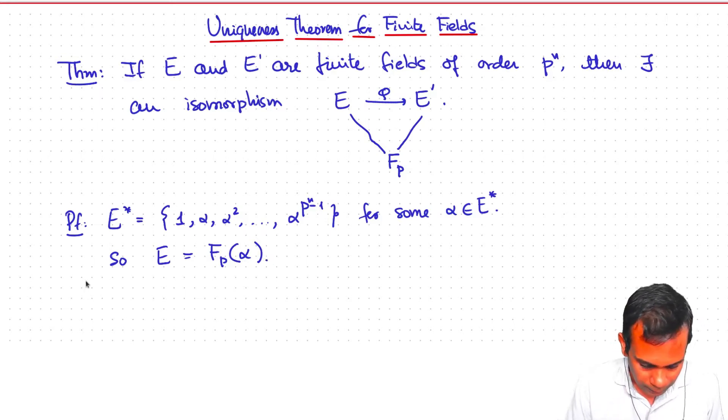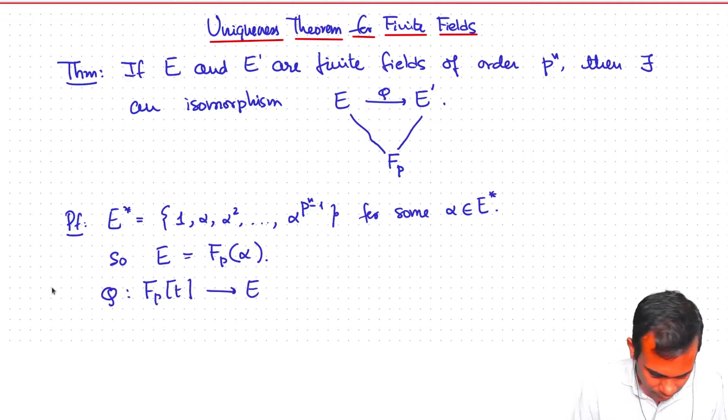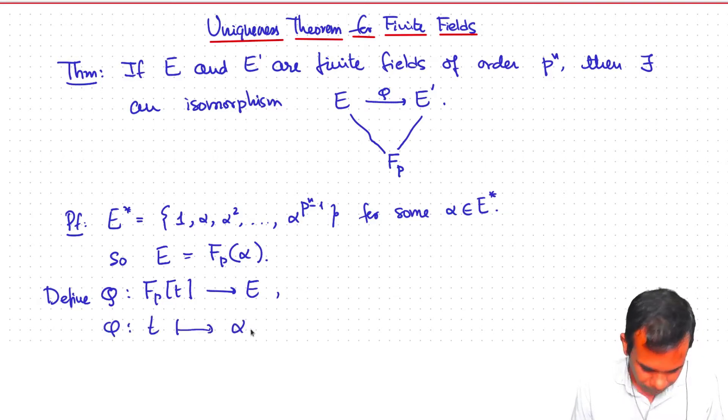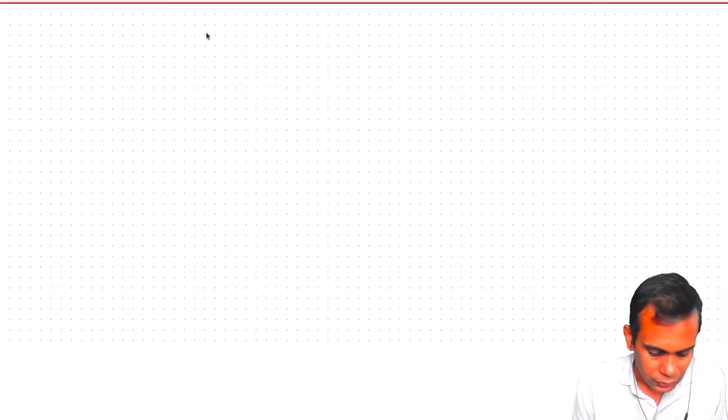And now, that means that we can construct homomorphism phi from Fp[T] to E as we did in the first lecture of this course, which just takes phi of T goes to alpha. Then what we have is that this phi gives rise to an isomorphism.